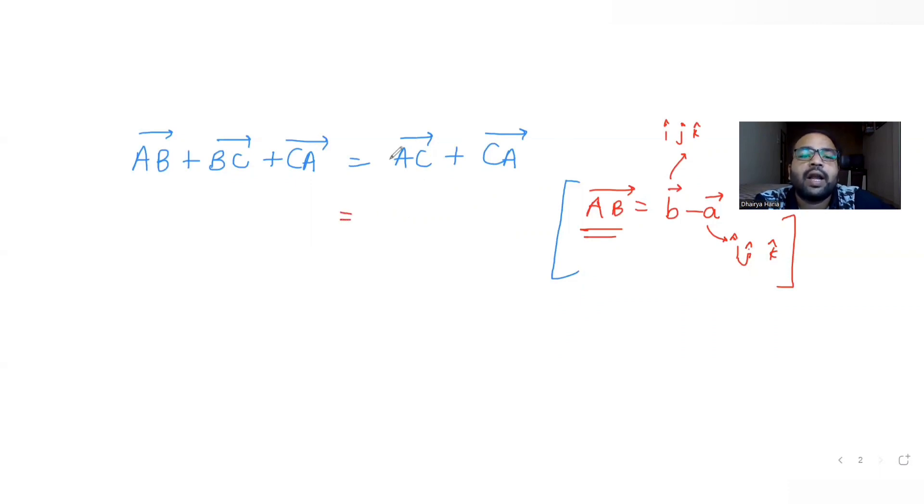Same thing if I apply here on the right-hand side, I can write this vector AC bar as C bar minus A bar, and vector CA bar I can write it as A bar minus C bar. So now C bar and minus C bar gets cancelled, minus A bar and plus A bar also gets cancelled for us.